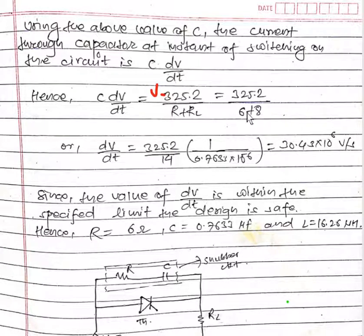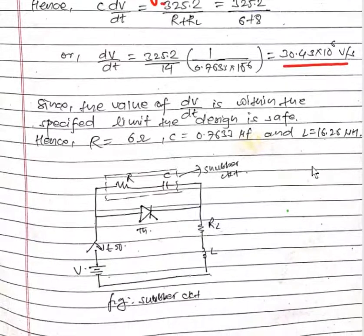6 plus 8 will be 14, so dV/dt equals 325.2 upon 14. The value of C we have calculated as 0.7633 × 10^-6, so dV/dt equals 30.43 × 10^6 volt per second.